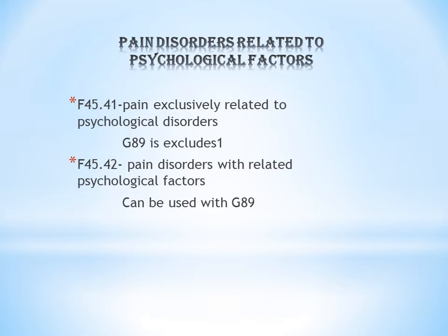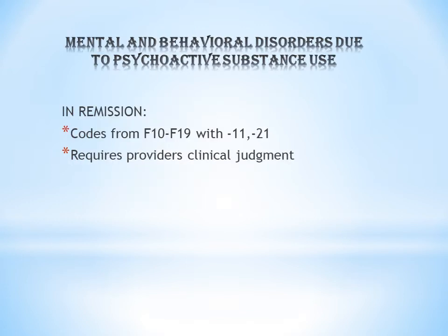So F45.41 and G89 cannot be coded together — they are mutually exclusive. However, F45.42 can be used with G89. For F45.42, since the patient has both physical and psychological pain, you can additionally code G89 for the physical pain type — acute or chronic.